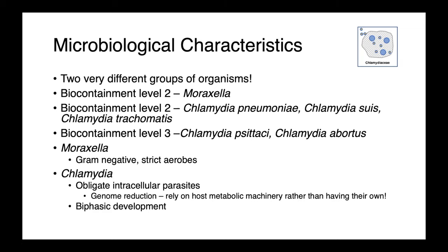While we're grouping these two organisms within one lecture today, they're really quite different from each other. Moraxella are all biocontainment level 2, while our Chlamydia species vary. Chlamydia pneumoniae, suis, and trachomatis are all biocontainment level 2, while Chlamydia psittaci and abortus are biocontainment level 3.